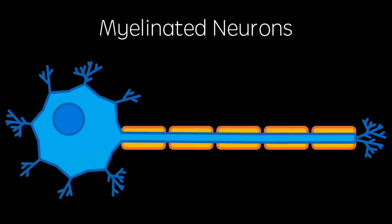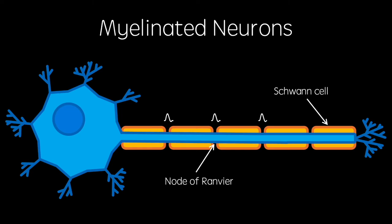Most peripheral neurons are myelinated, meaning their axons are surrounded by Schwann cells, which produce a myelin sheath for electrical insulation. The gaps between these sheaths are called the nodes of Ranvier, and are the only axon sections to propagate action potentials. Due to the electrical insulation, the neuronal cytoplasm conducts enough electrical charge to depolarise each node to the next. This increases the speed of the impulse greatly, and is known as saltatory conduction.